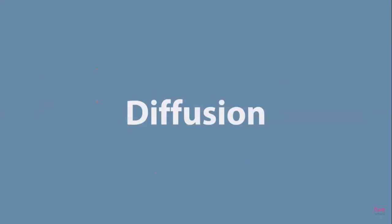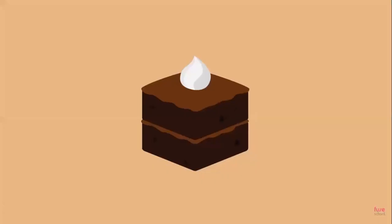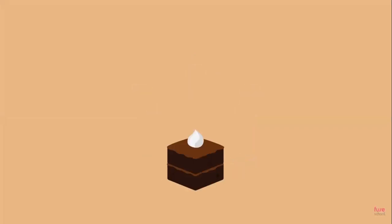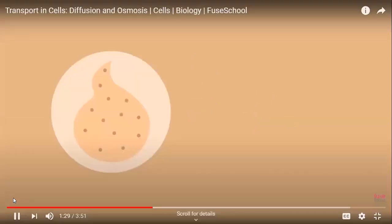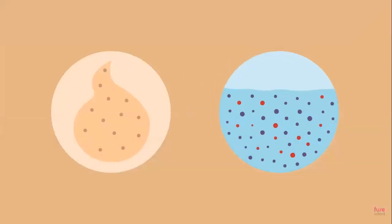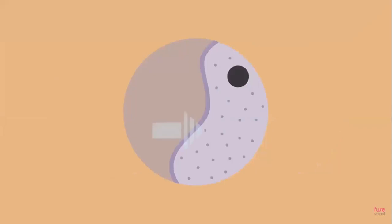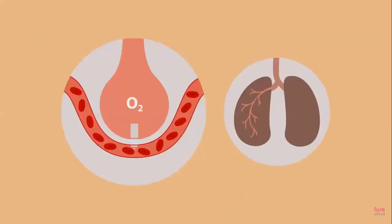Let's start with diffusion. The smells of the cake spread around the room by diffusion. Diffusion is the process in which particles spread out from each other — they move from high concentration near the cake to an area of low concentration everywhere else in the room. Particles move down the concentration gradient until they are evenly distributed. For particles to move like this, they need to be a gas or particles of a dissolved substance. Gas exchange in the lungs — oxygen moving from the alveoli into the blood, and carbon dioxide from the blood into the alveoli — are both great examples of diffusion.